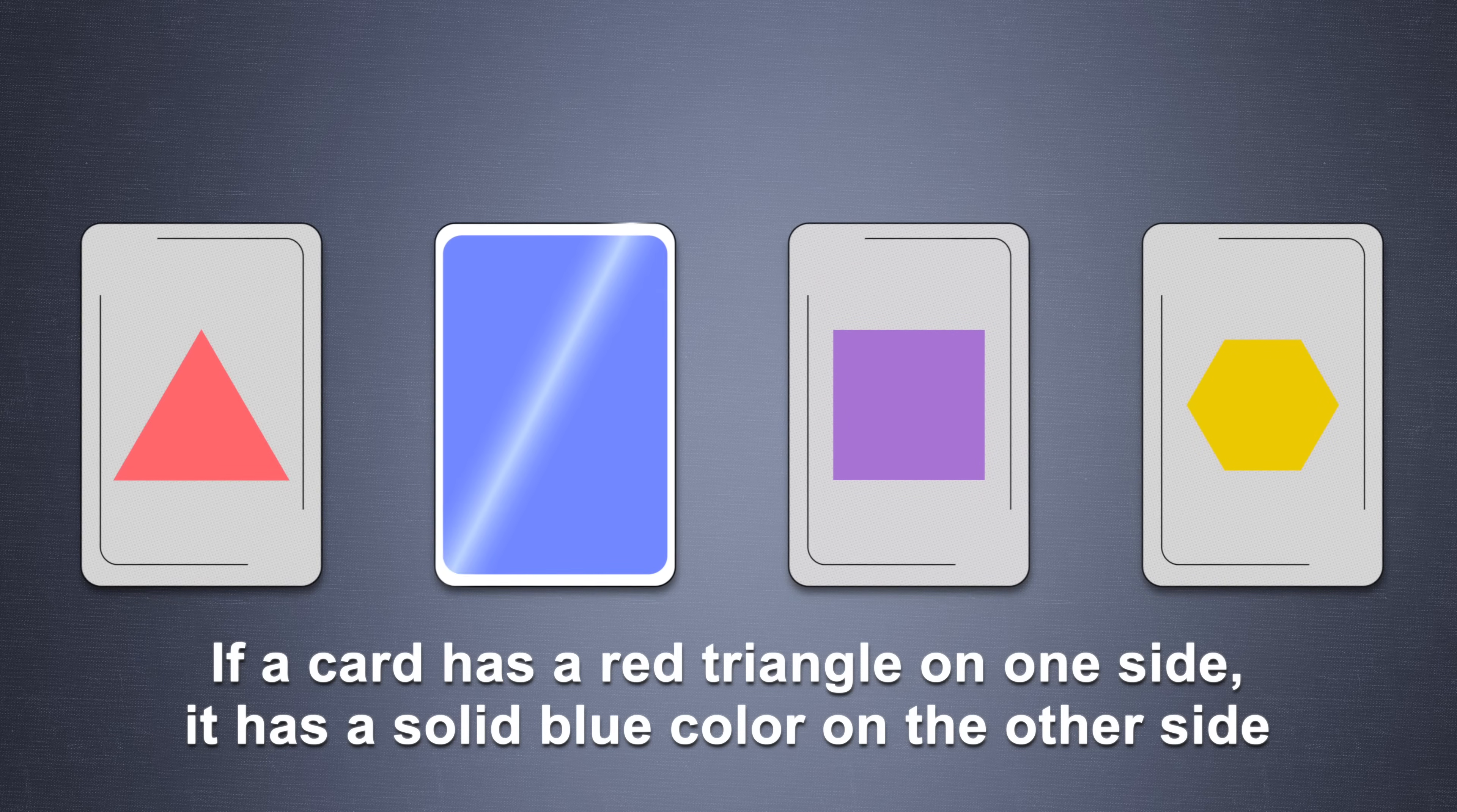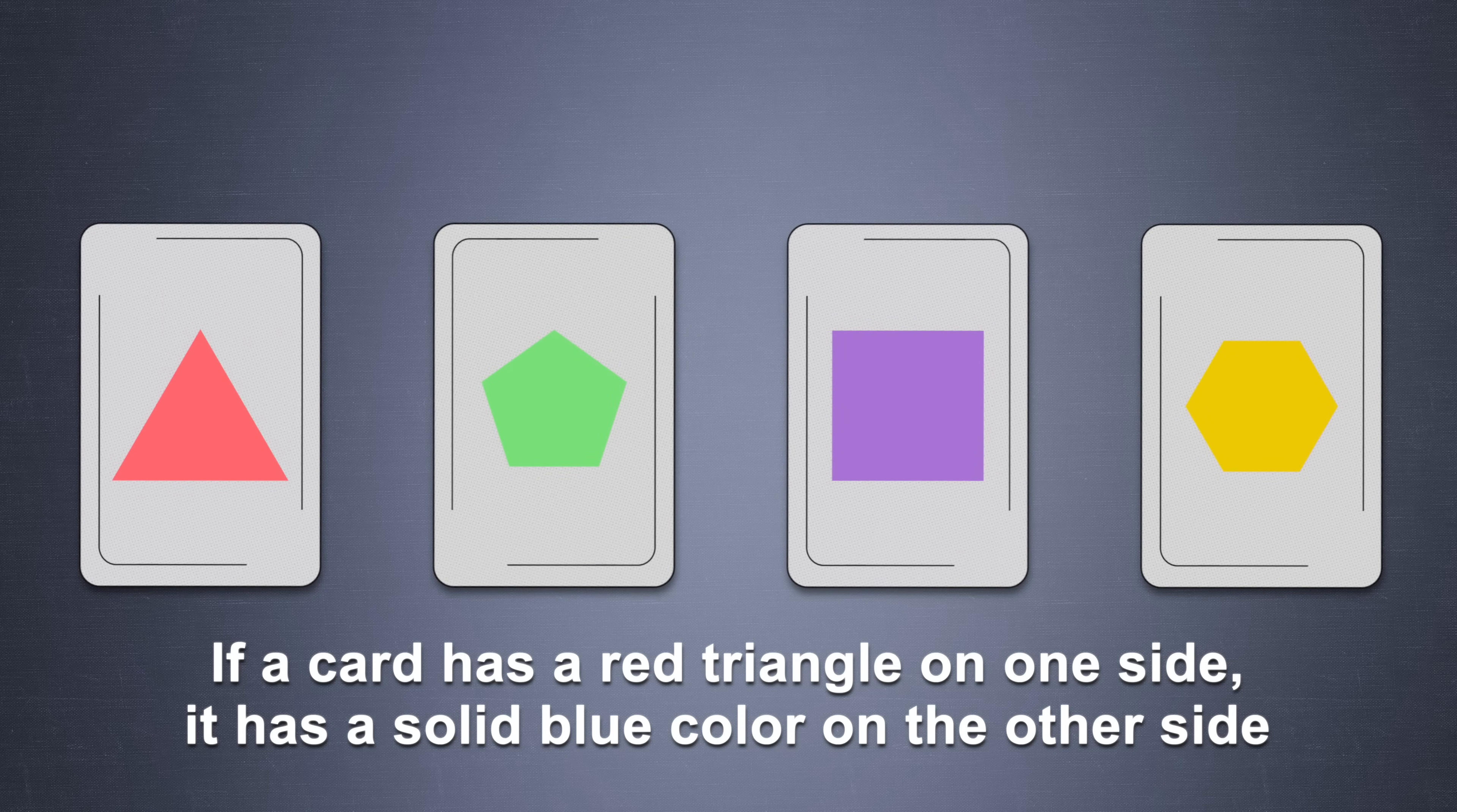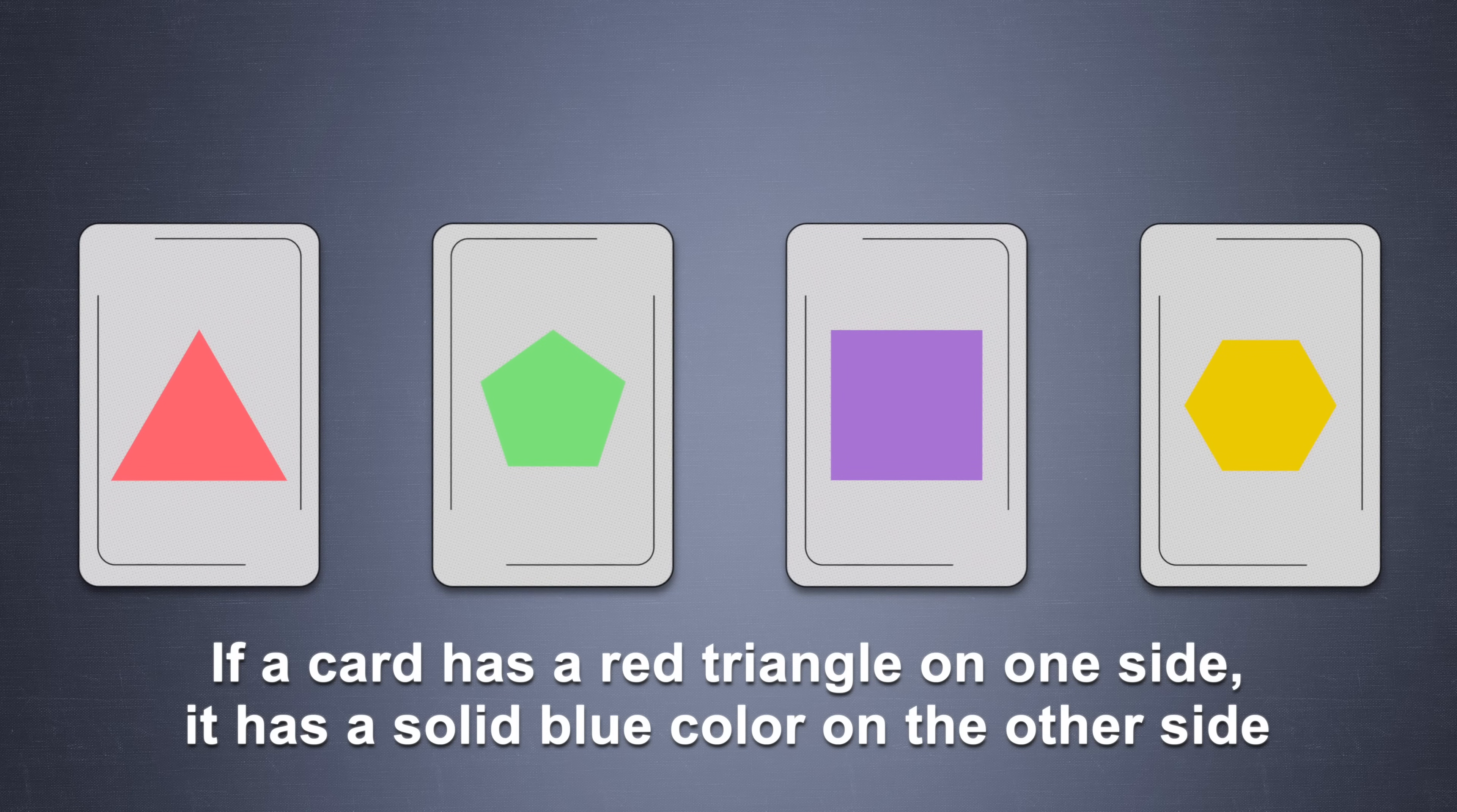There's no need to flip the solid blue card because the rule doesn't mention anything about what should be on the other side of a blue card. This task is tricky because it plays on the assumption that you need to do more to test the rule, when in fact, the correct and logical approach is more straightforward.